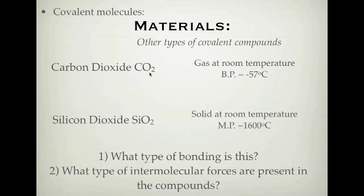Carbon dioxide is a gas at room temperature with a very low boiling point. We know it's a covalent compound because it only contains non-metals - carbon and oxygen. Because it has a low boiling point and low melting point, carbon dioxide must be a covalent molecule with weak intermolecular forces holding it together. In fact, carbon dioxide is a non-polar molecule, so it has dispersion forces holding it together.